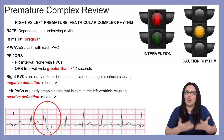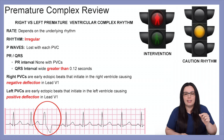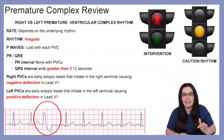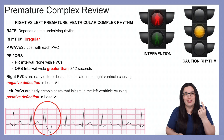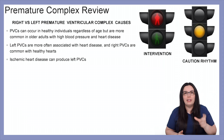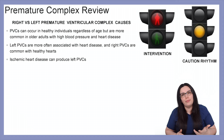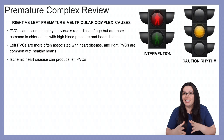When premature ventricular complexes are taking place, it's beneficial to find out whether it is of right or left ventricular origination. With right PVCs, you'll see ectopic beats that initiate in the right ventricle causing a negative deflection in lead V1. With left PVCs, you're going to see the ectopic beat originating in the left ventricle causing a positive deflection in lead V1. PVCs can occur in healthy individuals regardless of age, but are more common in older adults with high blood pressure and heart disease. Left PVCs are more often associated with heart disease, whereas right PVCs are more common in healthier hearts.